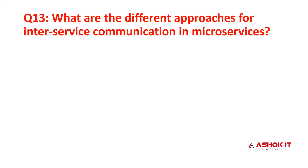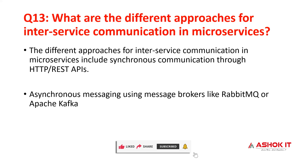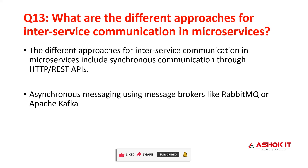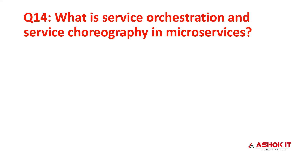Question 13: what are the different approaches for intra-service communication in microservices? If one microservice wants to communicate with another, we use intra-service communication. We can use HTTP REST APIs — RestTemplate or WebClient. Asynchronous messaging can be done using RabbitMQ or Kafka. We can also do event-driven communication using PubSub concepts or EventBus.